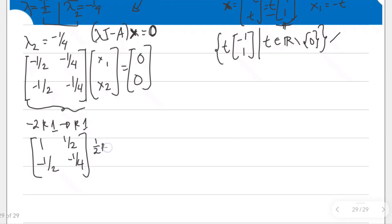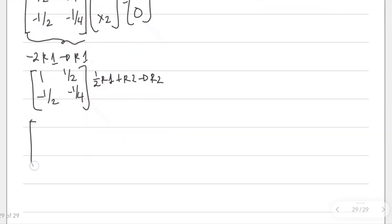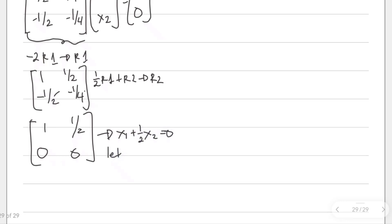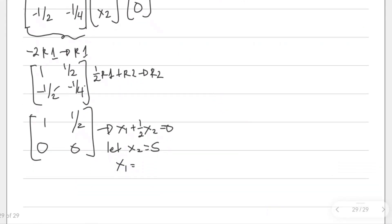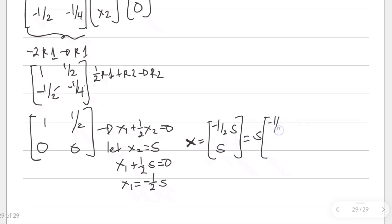Multiply 1/2 to R1 and add to R2: 1/2 times 1 is 1/2, plus negative 1/2 is 0; 1/2 times 1/2 is 1/4th, plus negative 1/4th is 0. The equation is x₁ plus 1/2 of x₂ equals 0. Letting x₂ equal s, x₁ plus 1/2 s equals 0, so x₁ equals negative 1/2 of s. The vector x is [negative 1/2 s, s], and factoring out s gives eigenvector [-1/2, 1].